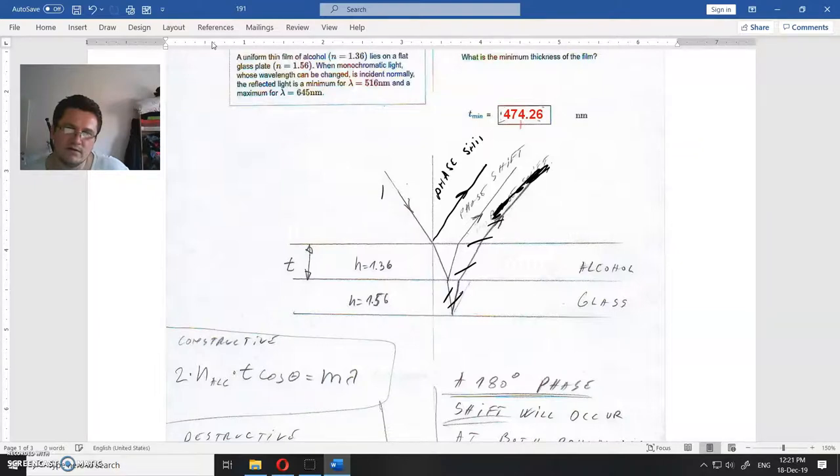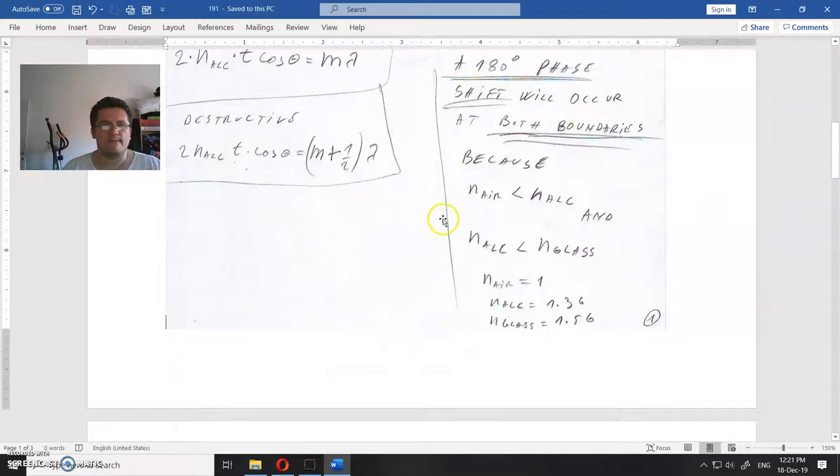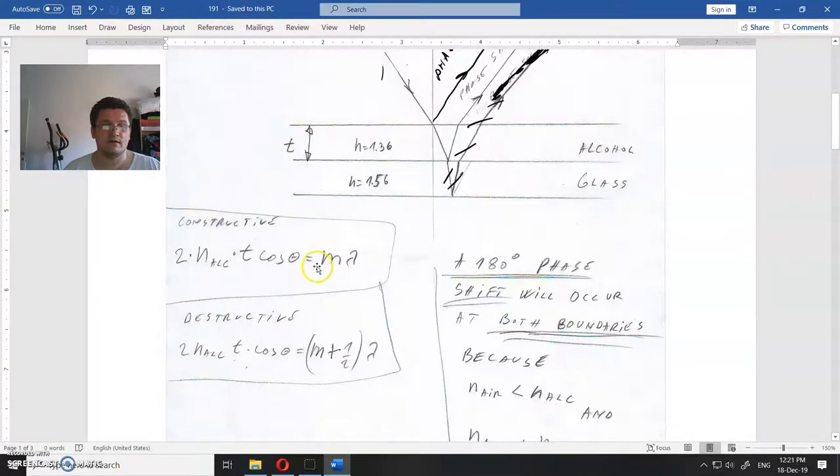Those are the two equations that we need. T is the thickness, and the path difference is this distance here. This part is the optical path difference between those two. It equals m·lambda for constructive interference and (m + 1/2)·lambda for destructive interference. Now we have everything and just need to find T. This is n of alcohol.